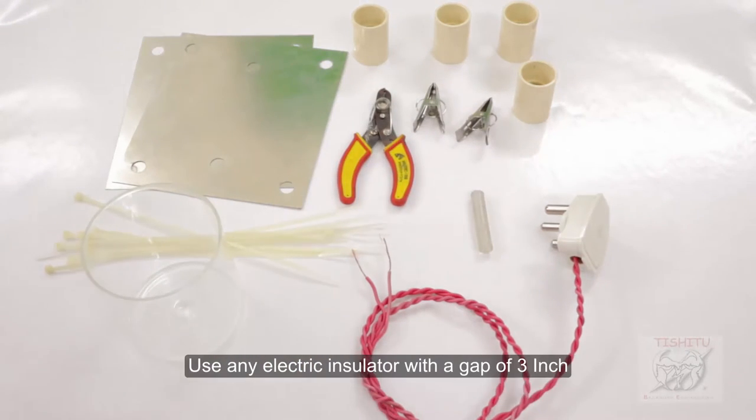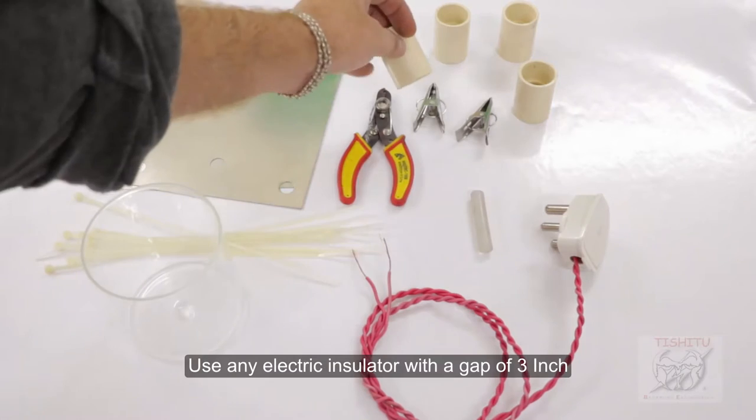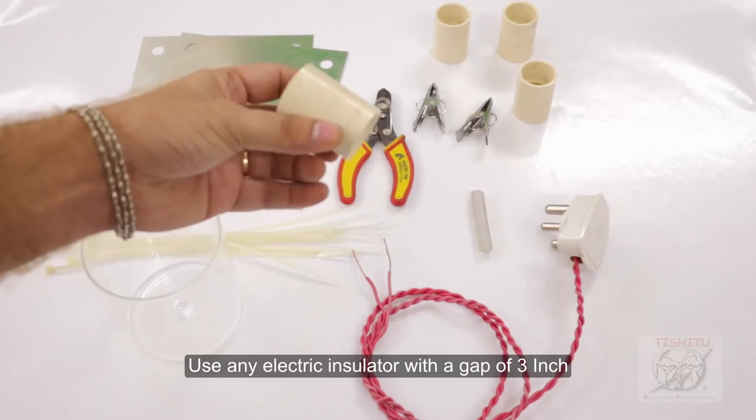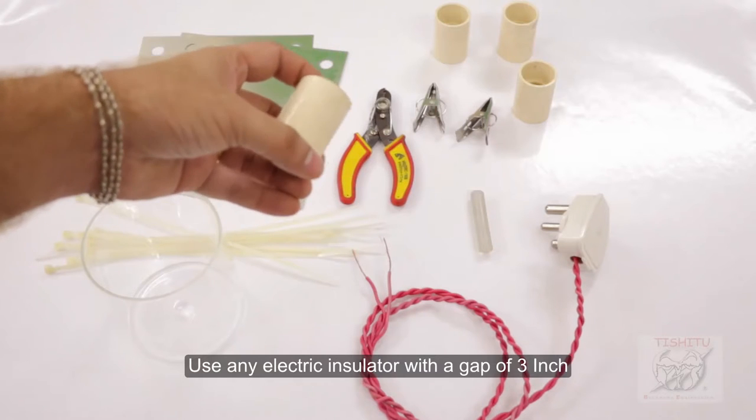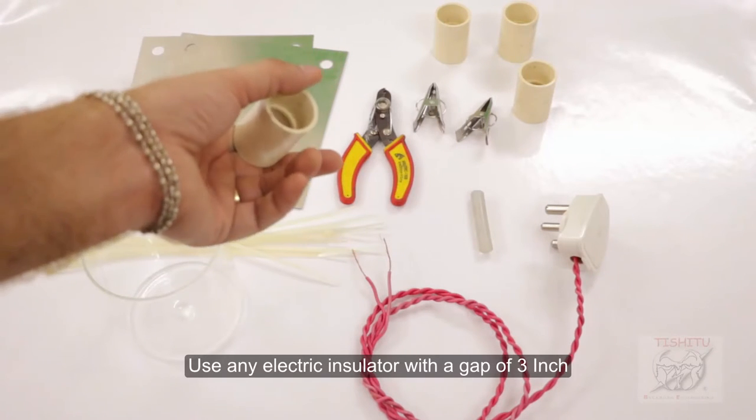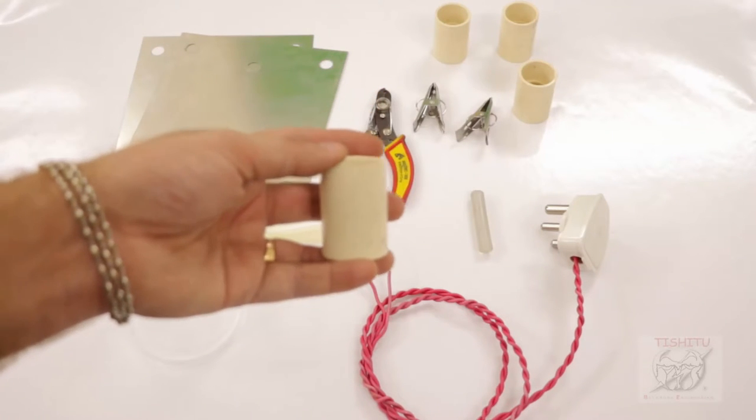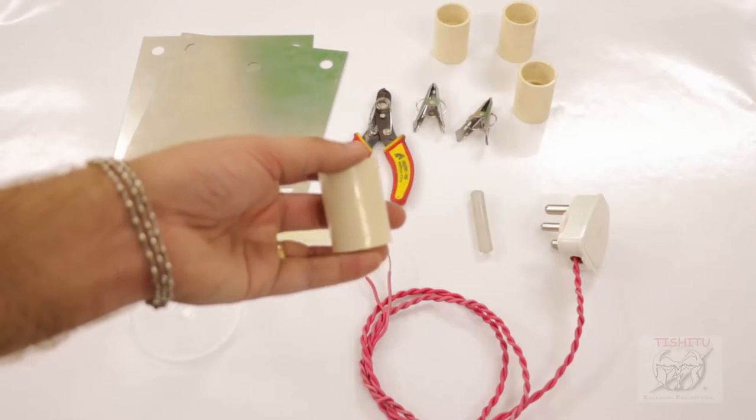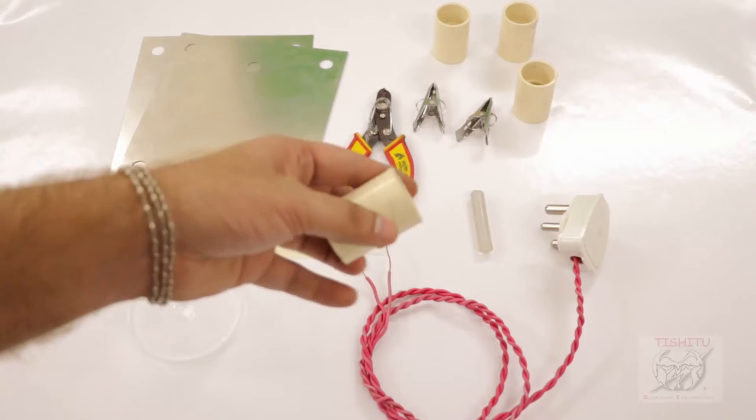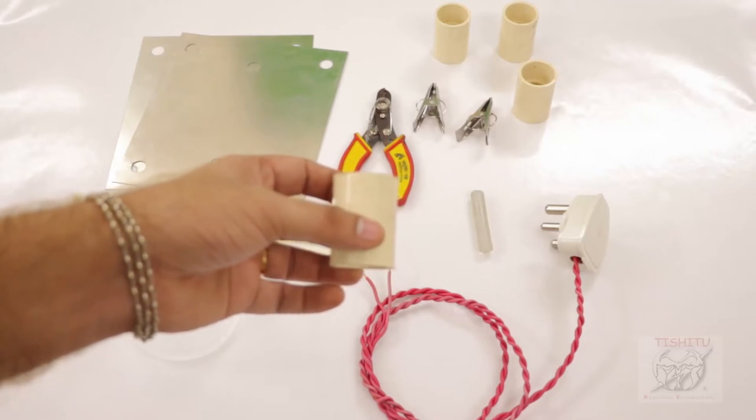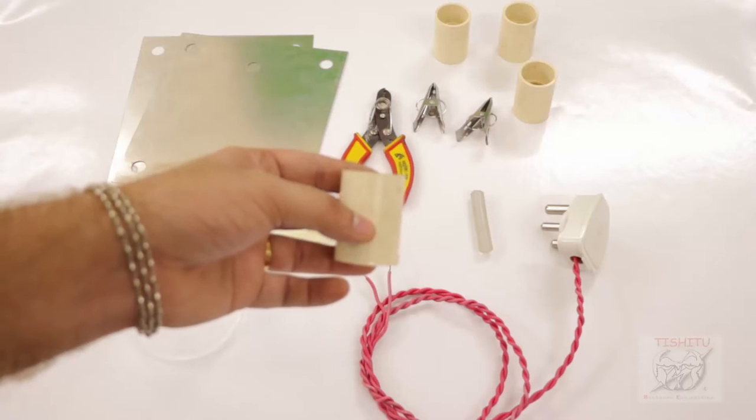If you want to make a separation between two plates, I am using these plastic sockets. These are available in sanitary shops for plumbing and things like that. These are CPVC sockets or they can be PVC and plastic type. You can take wood also, which has non-conducting properties.